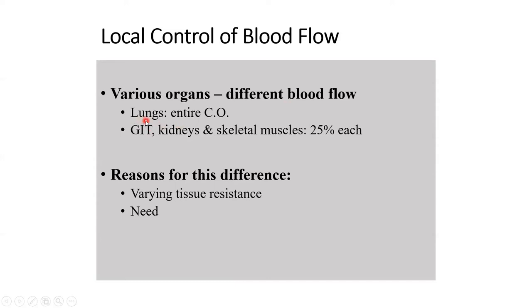Lungs accommodate the entire cardiac output per minute, so there is an extremely large flow of blood through the lungs at all times - that's a requirement because the blood needs to be oxygenated. Other examples include the GIT, kidneys, and skeletal muscles, which each take up about 25% of cardiac output.